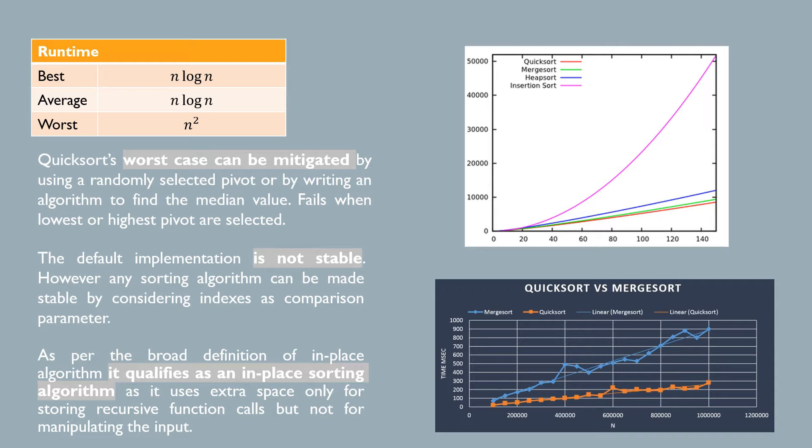Quicksort only uses extra space to store recursive function calls, as opposed to the competitor MergeSort, which requires linear extra space.